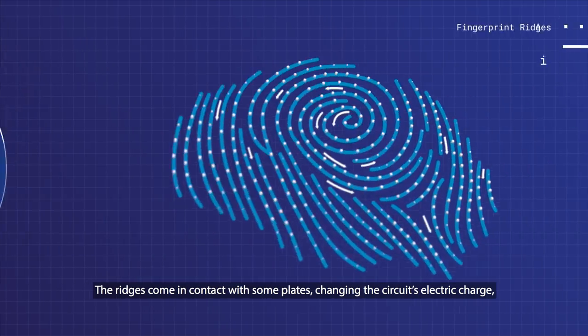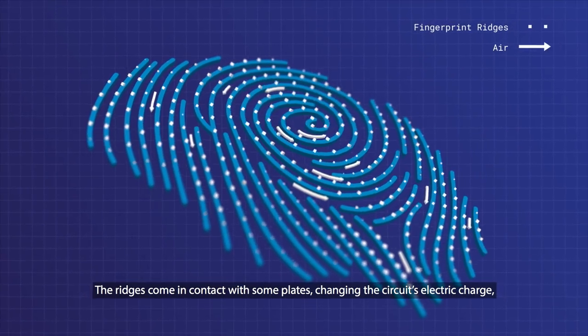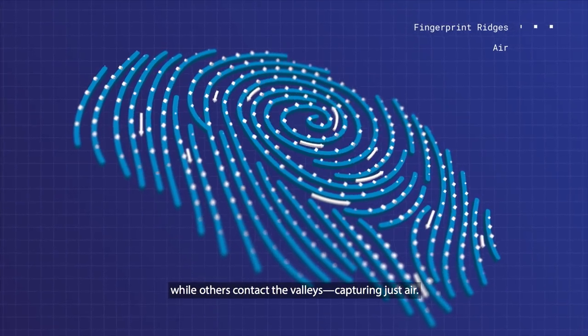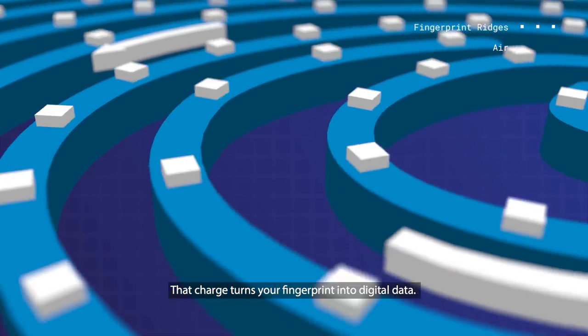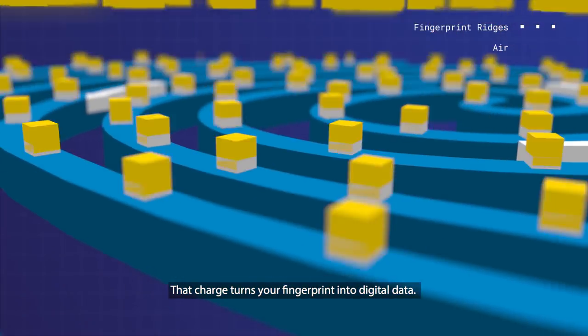The ridges come in contact with some plates, changing the circuit's electric charge, while others contact the valleys, capturing just air. That charge turns your fingerprint into digital data.